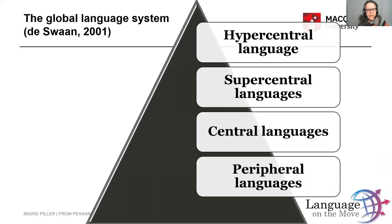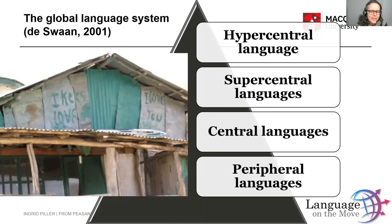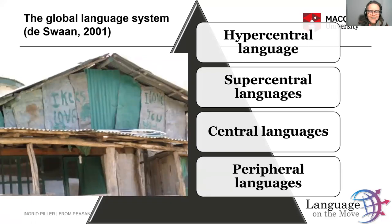Indeed, all of us have had the experience that English is kind of inescapable. The example I've got here is of graffiti on a shrine in a very remote part of Iran — I hiked there a couple of years ago. This is a place far in the mountains that is only accessible on foot. Iran has been under sanctions for a long time, so it feels like a fairly remote country in the global system. And then within this fairly remote part of the country, accessible only on foot, you get to that shrine — and what do you see? English graffiti. English is really everywhere.